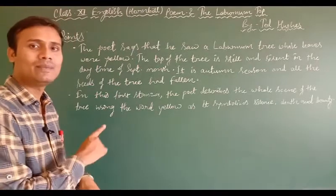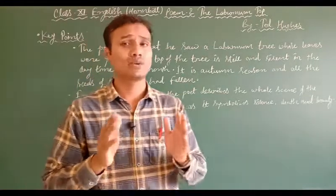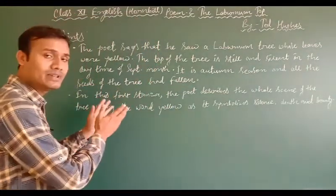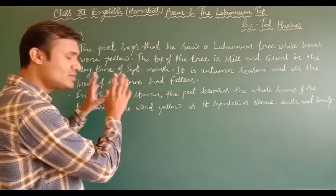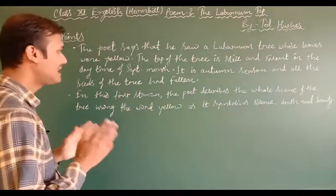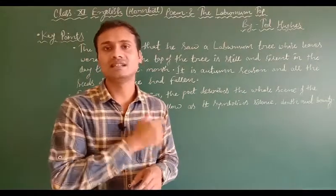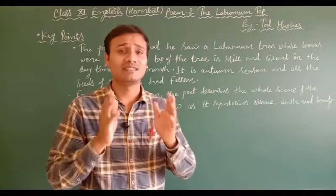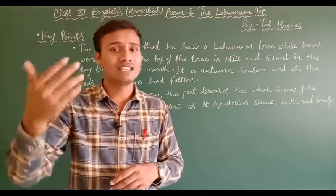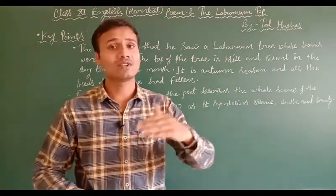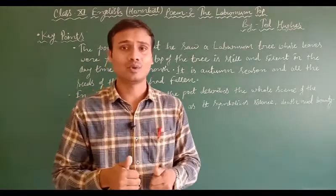This poem has been divided into three stanzas. In the first stanza, we study the description of the laburnum tree before the goldfinch bird reaches it. The second stanza describes the coming of the bird as it takes shelter in the tree. The third stanza describes the condition of the tree as the bird flies away.